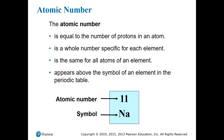All of the atoms of a particular element have the same atomic number — they have the same number of protons in the nucleus. That's what makes them that element. So every atom of hydrogen has one proton in its nucleus. You can change the number of electrons and you can change the number of neutrons, and it'll still be hydrogen, although a different kind. But as long as it has one proton in the nucleus, it is hydrogen. If it has two protons in the nucleus, it is helium, no matter what other electrons or neutrons are present.